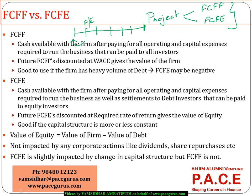When discounting, if I am projecting FCFEs, I will discount them with the required rate of return on equity. If I am projecting FCFFs, I will discount them with the weighted average cost of capital (WACC). This is because the required rate of return on equity is expected only by equity investors, whereas the weighted average cost of capital reflects the return expected by both debt investors and equity investors. So I discount FCFFs by WACC.